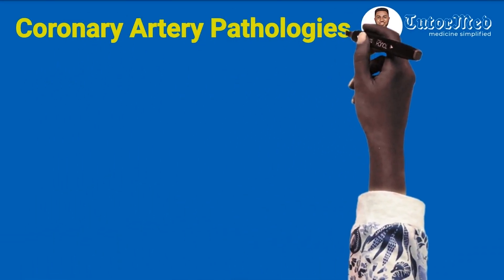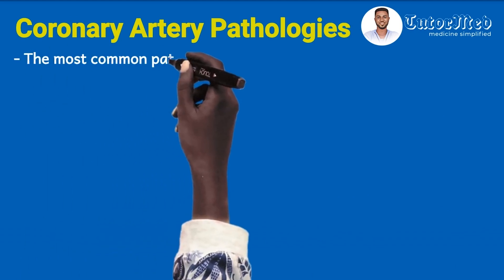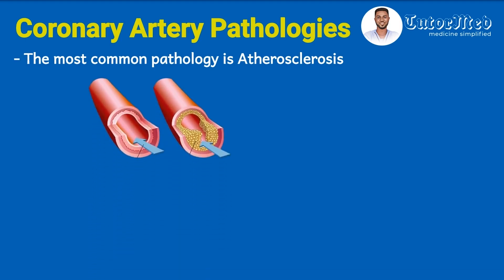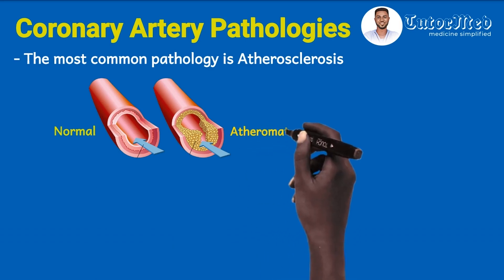Let's review the main pathologies of the coronary arteries which can cause myocardial ischemia. The most common pathology is atherosclerosis — the thickening or hardening of the endothelial lining caused by buildup of fatty or cholesterol plaques. This buildup reduces the lumen size of the artery, as shown in this diagram. The artery on the left represents a normal artery, while the artery on the right is a diseased one showing the atheromatous plaques.